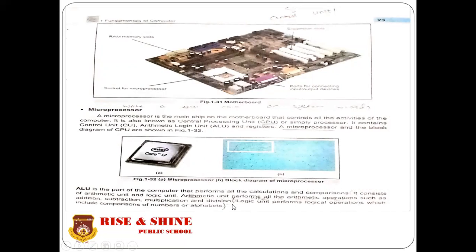The Arithmetic Unit performs all mathematical operations. The Logic Unit performs logical operations, which include comparisons of numbers and alphabets — for example, A is greater than B, or 5 is less than 6.